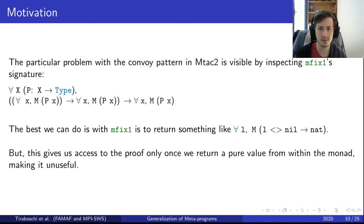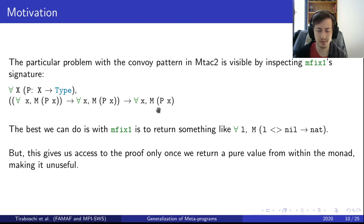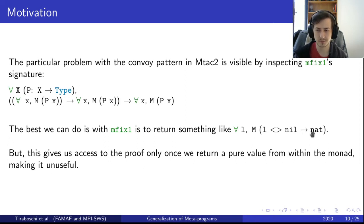The particular problem with the convoy pattern in Mtac2 will be visible by inspecting mfix1, which is the fixpoint we were using in the example. The return type of mfix should look something like 'for all x, P x'. We would like to use a convoy pattern, but we can't if we're forced to put P inside the monad. Here P would be something like 'the proof implies nat'. The best we can do is that mfix1 returns something like 'for all l, l is not empty -> nat', which is basically not what we actually want — this gives us access to the proof only once we return a value from within the monad, making it unuseful.